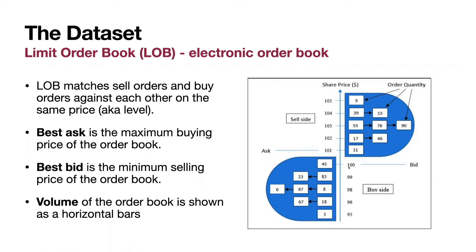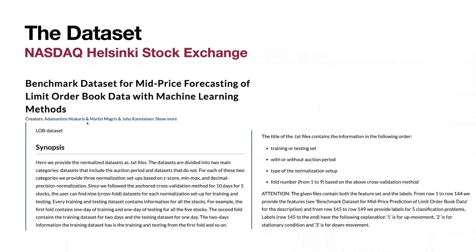So again, price defines the level of the limit order book. Ask level 101 has size 31. Ask level 102 has total size 64, and ask level 105 has size 9. The limit order book matches sell and buy orders against each other at the same price. Best ask is the maximum buying price of the order book requested by traders. Best bid is the minimum selling price requested by buyers. Volume is shown in horizontal bars, and can be thought of as the volume of each level, as well as the volume of the bid side, the ask side, and the whole limit order book.